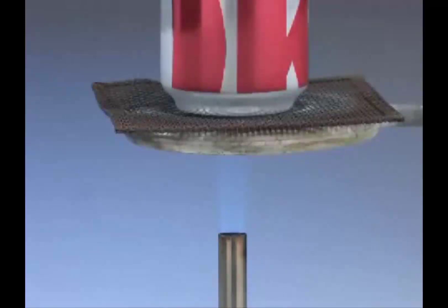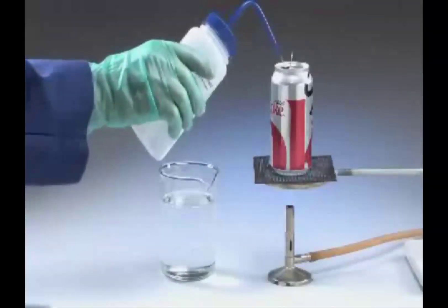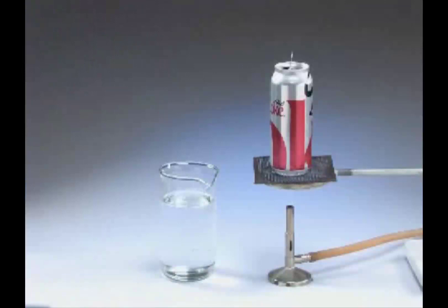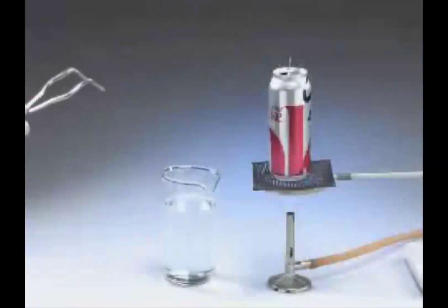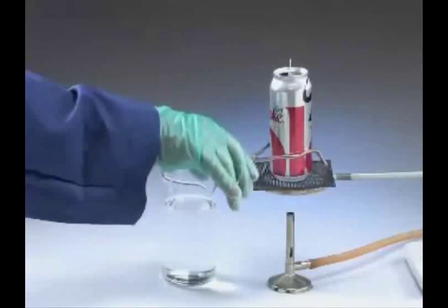So here is a classic example of a can crushing experiment. So in this video, you'll see that there'll be a little bit of water that we put into our can. The water will be heated to boiling and then the can will be moved and put into this beaker of cold water. So let's see what happens.